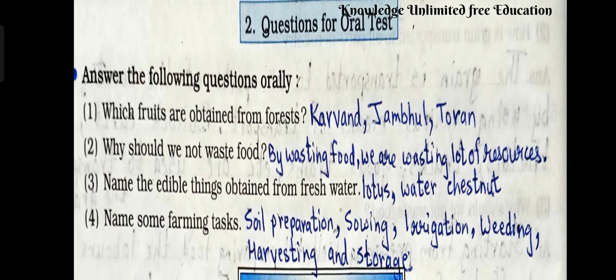Questions for oral test. Number 1: Which fruits are obtained from forest? Answer: Karawanda, Jambul, Toran. Number 2: Why should we not waste food? Answer: By wasting food, we are wasting a lot of resources. Number 3: Name the edible things obtained from fresh water. Answer: Lotus, water chestnut. Number 4: Name some farming tasks. Answer: Soil preparation, sowing, irrigation, weeding, harvesting, and storage.